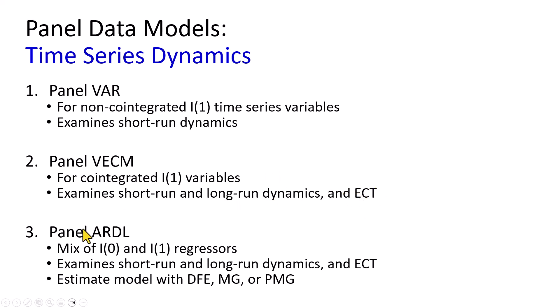And in the case where we have a mix of I(0) and I(1) variables, which is where some variables are stationary at level and others are stationary only after first differencing, then we could run panel autoregressive distributed lag, which would also allow us to examine not only the short run, but also the long run dynamics and the error correction term.